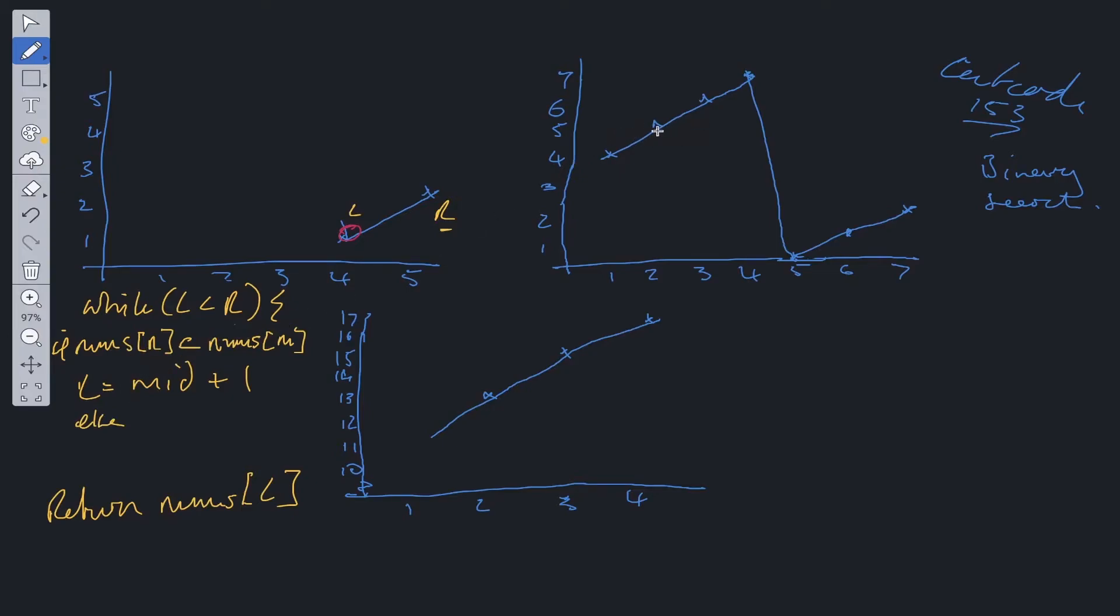Looking at the next example, we've got left, right, and mid. The minimum value is here. Is nums[right] less than nums[mid]? Yes it is, so we reallocate left to mid plus one and discard the rest. Now we've got three points left, so we need to check again.